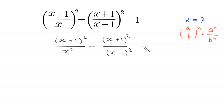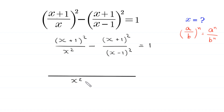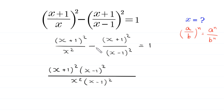Now we take the LCM of x² and (x - 1)². The LCM is x² times (x - 1)². We divide this LCM by the denominator x²; x² gets cancelled, and we multiply (x + 1)² by (x - 1)². Then dividing the LCM by (x - 1)² cancels that term, so we multiply (x + 1)² by x².